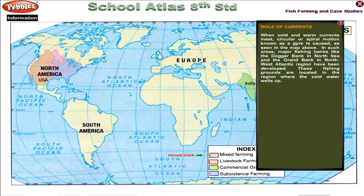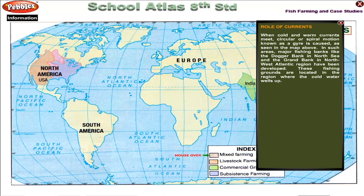Role of currents. When cold and warm currents meet, a circular or spiral motion known as a gyre is caused, as seen in the map above. In such areas, major fishing banks like the Dogger Bank in the North Sea and the Grand Bank in the Northwest Atlantic Region have been developed.